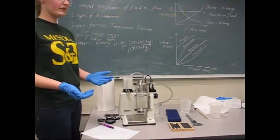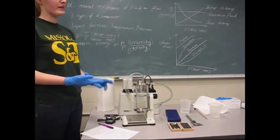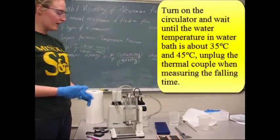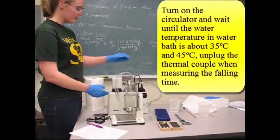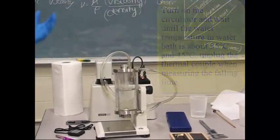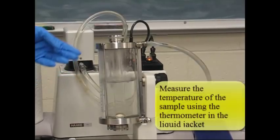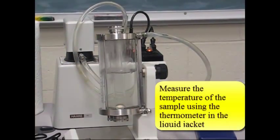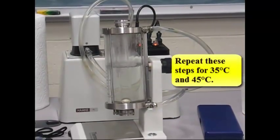So we just completed this experiment at room temperature and we're going to run the same experiment at two more temperatures at 35 degrees and 45 degrees. In order to heat the water jacket surrounding the tube to 35 degrees we use the circulator. We're going to turn on the circulator, let the water heat up and then use the thermometer inside the jacket to see when the water reaches 35 degrees and 45 degrees Celsius and then repeat the same steps that you saw before.